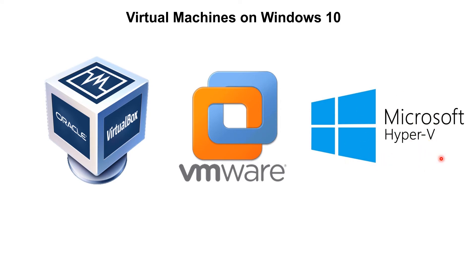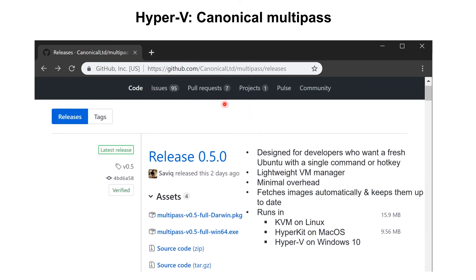Since the Fall Creators Update, Microsoft has also included a virtual machine manager called Hyper-V. We're going to look at how to use this and what Canonical — the company behind Ubuntu — has been doing to integrate with Hyper-V. Their latest release is called Canonical Multipass.